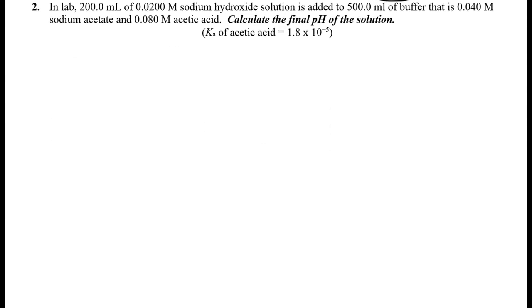The next problem involves adding 200 mL of sodium hydroxide — we can cross out the sodium since it's a spectator — to a buffer containing acetate (A−) and acetic acid (HA). The hydroxide is a strong base. When you add a strong base to a weak acid, you get a neutralization reaction. That's really important. A strong base and weak acid in solution will have a very large K value, so we'll approximate it as a one-way reaction.